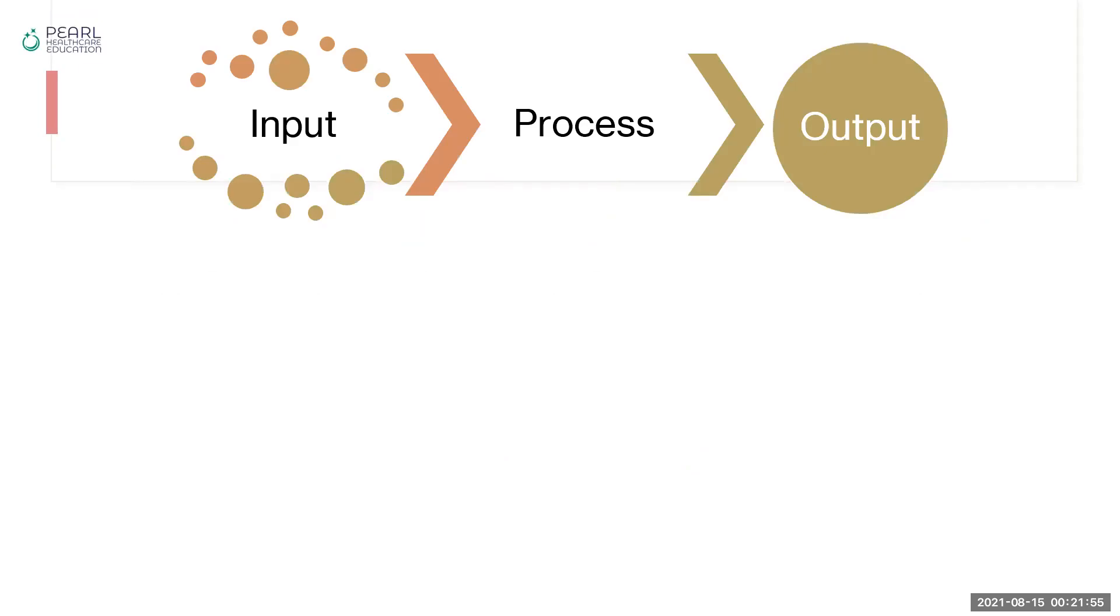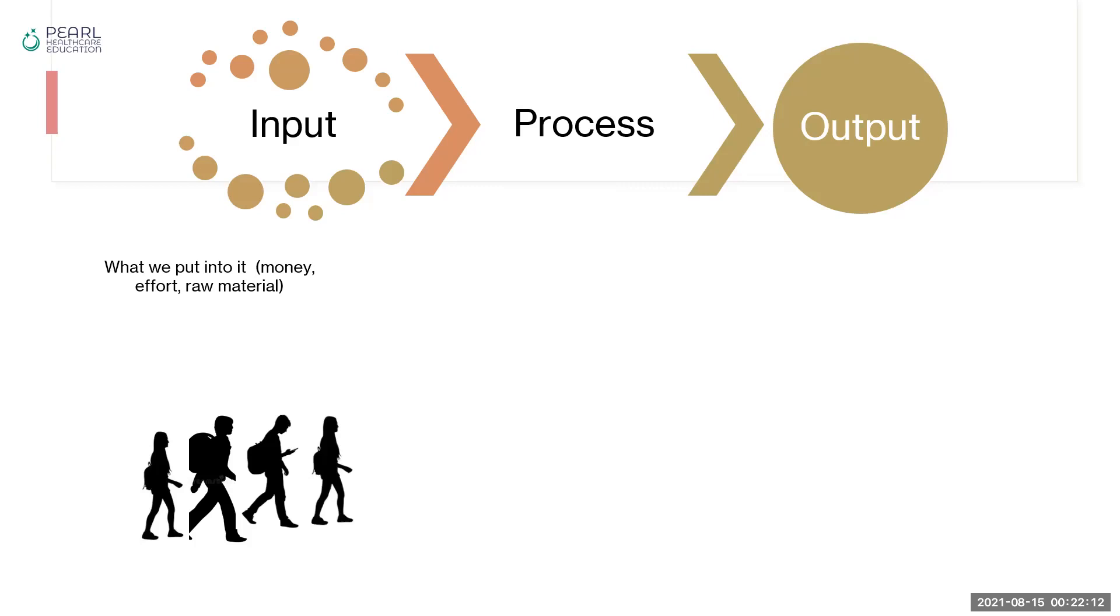So let's look at the example of input, process, and output. Take the example of your own institution, like nursing schools. What we put into a system could be money, effort, raw material. Let's take the example of students. When we have the students who we put through nursing schools, then what happens during that time period when they are within the nursing schools? Processes are everything that helps modify the input and transform it to a completely different thing.